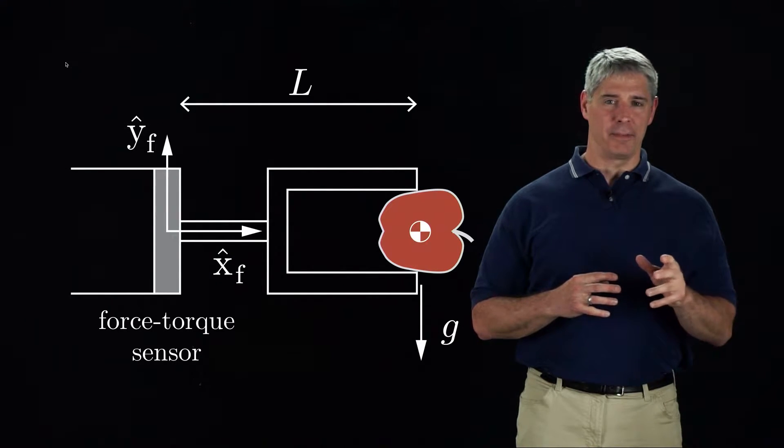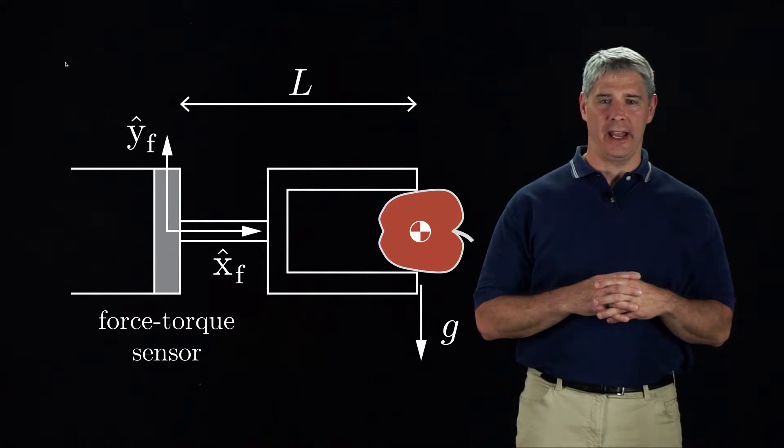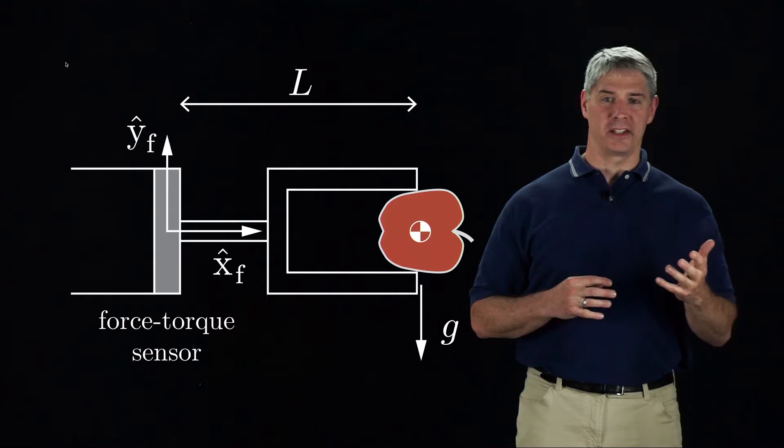If we know the mass of the apple, the direction of gravity, and the location of the apple in the hand, what are the forces and torques measured by the sensor?